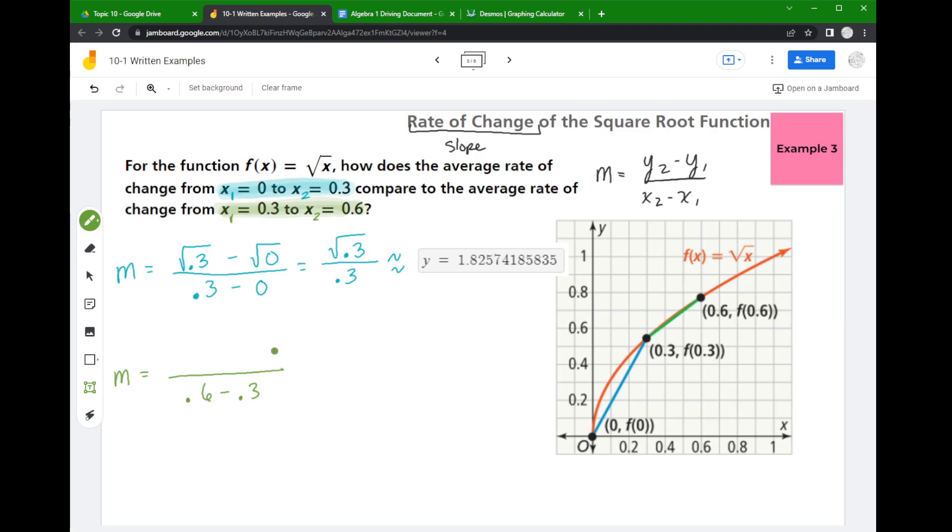So I'm going to say m equals—so my x1 is 0.3 and my x2 is 0.6. Now to get my y values again, I'm plugging these x values into the square root function. So my x2 was 0.6, so I'm plugging in 0.6.